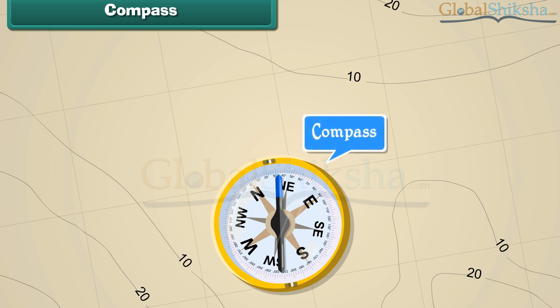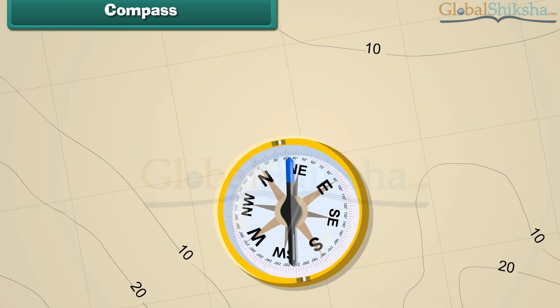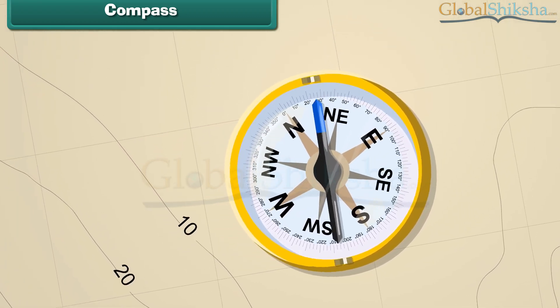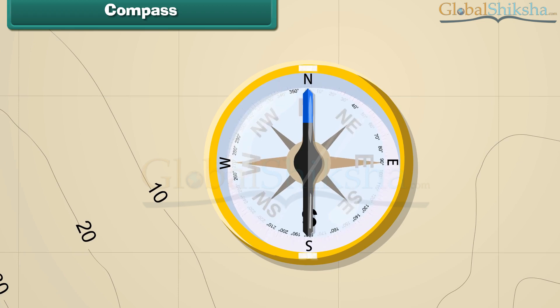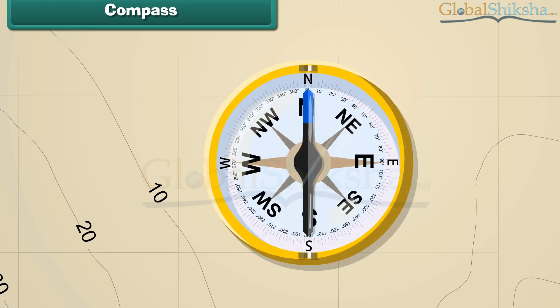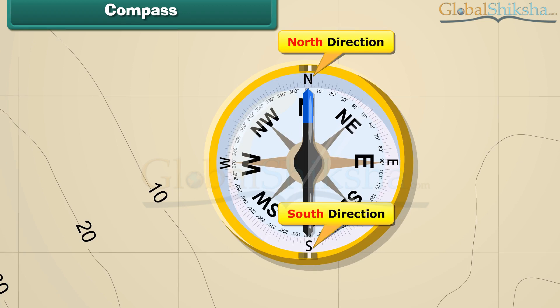Compass. This is a compass. It is a device we use to find directions. The compass has an arrow with a head and a tail. The head always points to the north and the tail to the south.